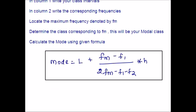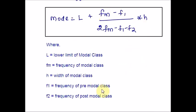Here is the formula to find the mode when your example has class intervals. Where L denotes the lower limit of the modal class, and Fm is nothing but the frequency of modal class. H is nothing but the width of the modal class. And F1 is the frequency of pre-modal class. F2 is the frequency of post-modal class. So, this is the entire formula. Hope you are clear with this one.